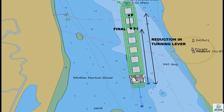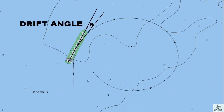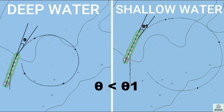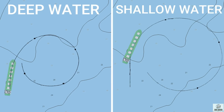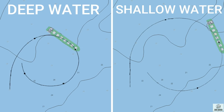A combination of reduction in turning lever and lateral resistance decreases the drift angle. The drift angle is simply the angle between the fore and aft line and the tangent to the turning circle. As you can see, the drift angle in the case of shallow water is greater than in deep water. It has been noticed that the size of the turning circle in shallow water can be three times the size of the turning circle in deep water.